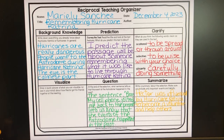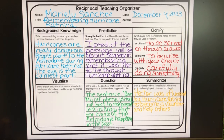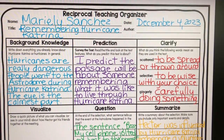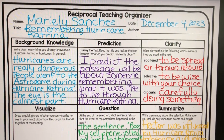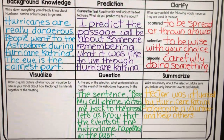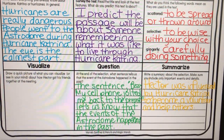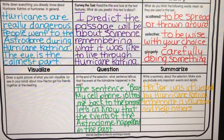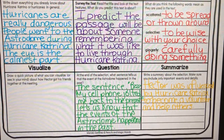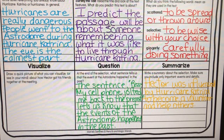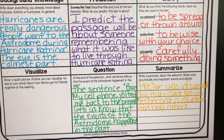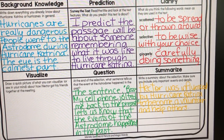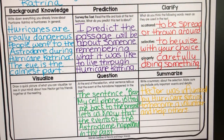Then students were working on completing this reciprocal teaching organizer. They needed to fill out their background knowledge and their prediction. I told them to just write it even though we already read it. They needed to clarify these three vocabulary words and visualize a particular part of the story where Hector got his friends together at the meeting. The question was on the sentence that told us the events in the Astrodome happened in the past because we're working with flashbacks. And the students had to summarize.